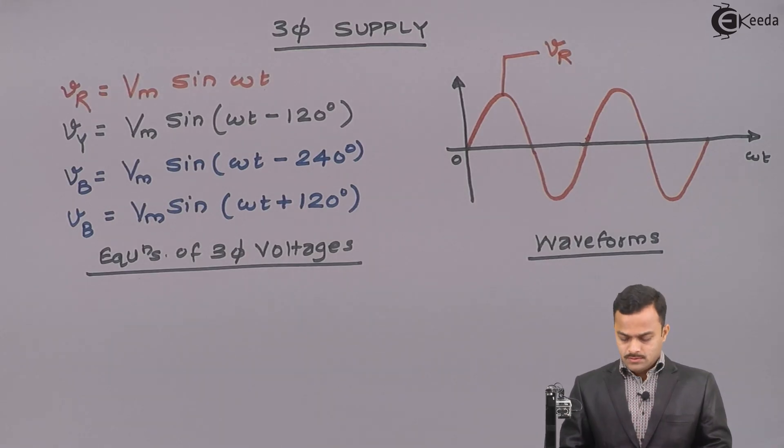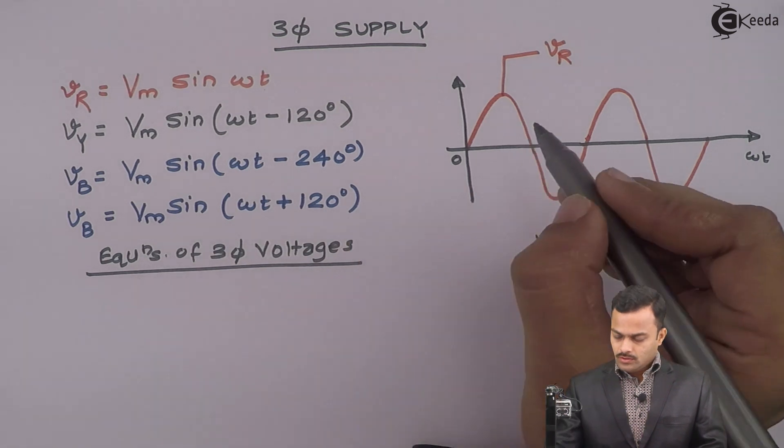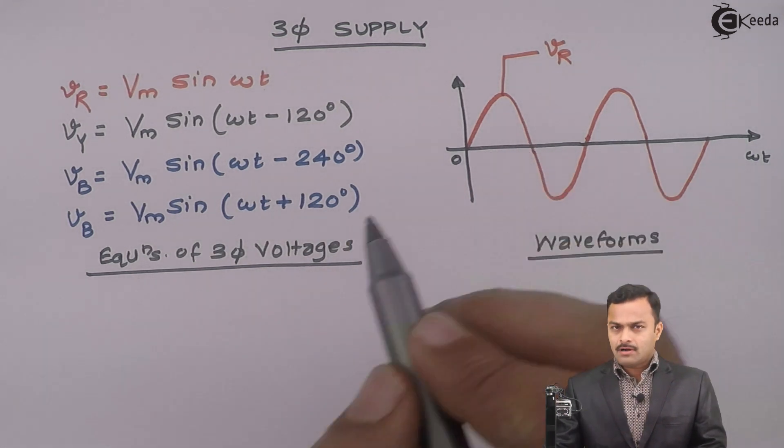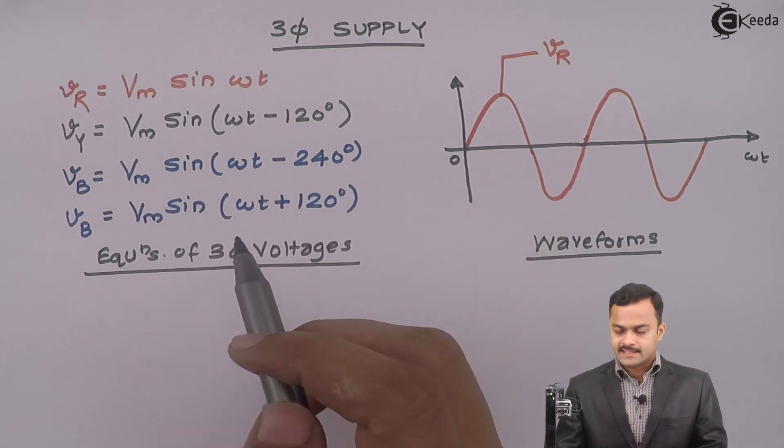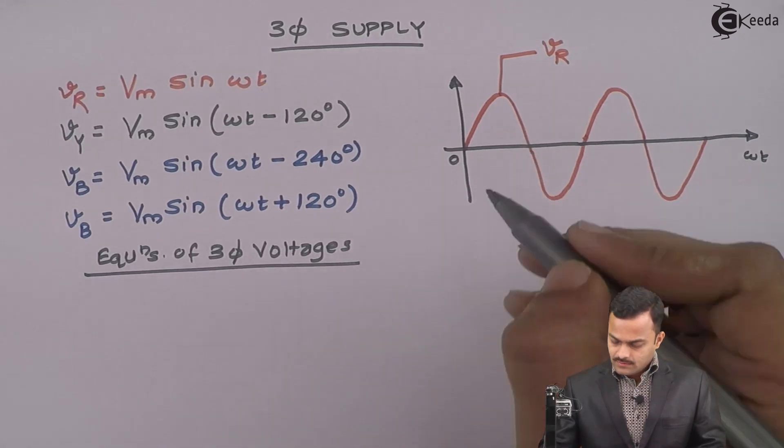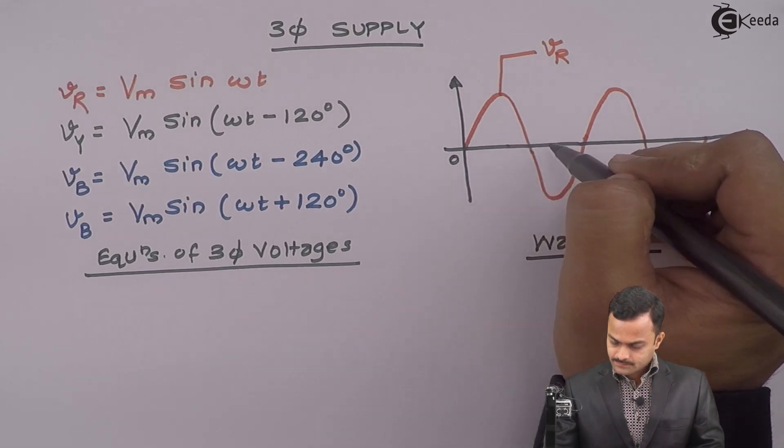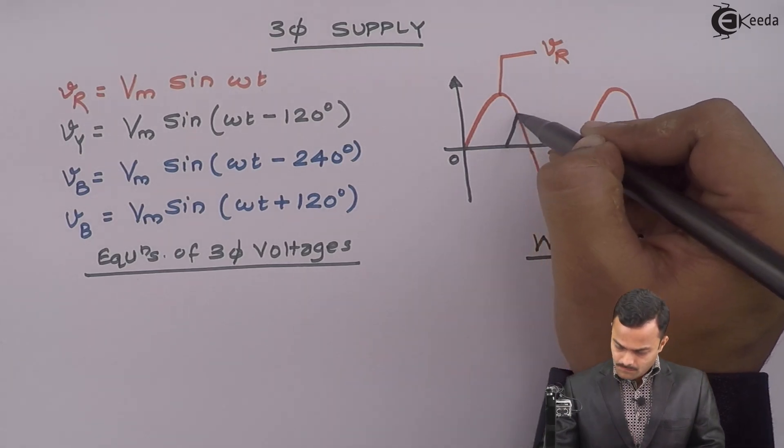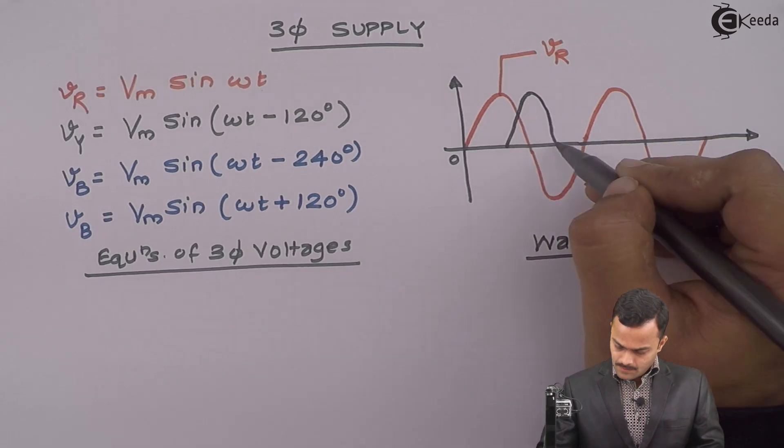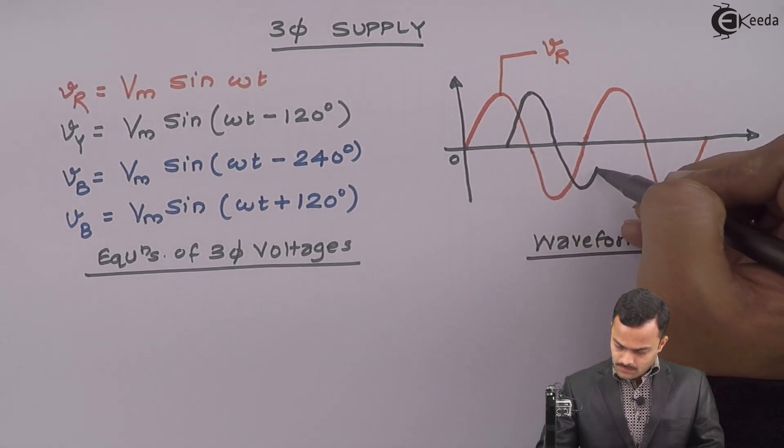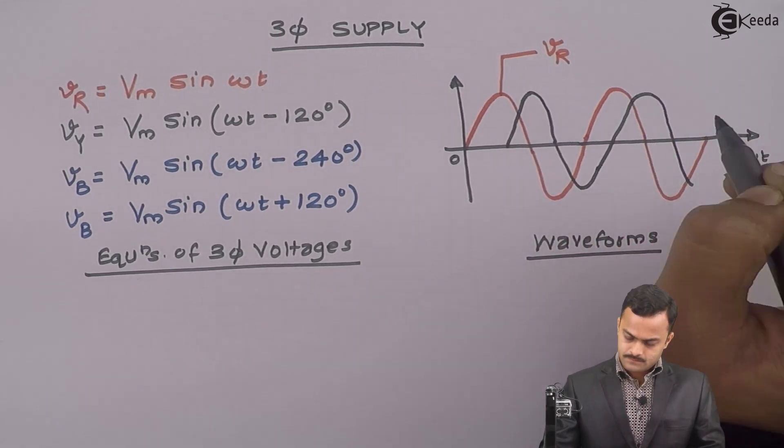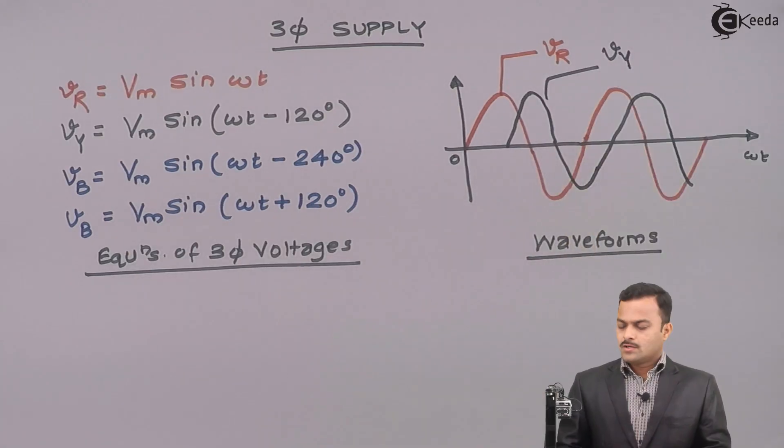Vy is Vm sin omega t minus 120-degree. So, it will lag this Vr by 120-degree because of this minus sign. So, it will start from here and it will be like this. This is Vy.